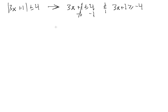We can subtract 1 from both sides: 3x is less than or equal to 4 minus 1, which is 3. We can isolate our variable by dividing both sides by 3, which gives us x is less than or equal to 1. Alright, so that's our first endpoint — x is less than or equal to 1.